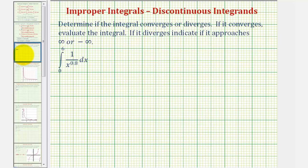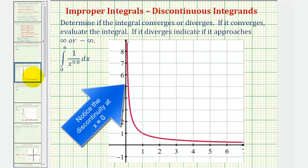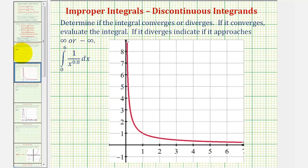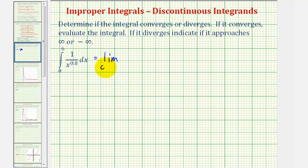Going back to our first example, notice how our function here would be undefined or discontinuous at x equals zero. We can verify this by looking at the graph as we see here. So we're going to write this integral as a limit as c approaches zero from the positive side of the integral from c to six. I'm going to write this as x to the power of negative 0.8 so we can apply the power rule of integration.